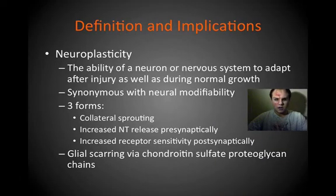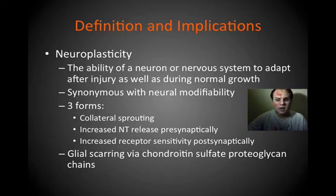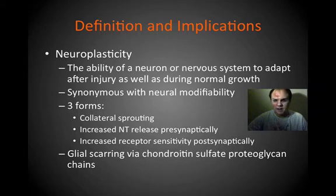Next, I'll define neuroplasticity. From looking at various sources, it is best defined as the ability of a neuron or nervous system to adapt after injury as well as during normal growth. You can look at neuroplasticity as being synonymous with neural modifiability, adaptation, or the ability to adapt.